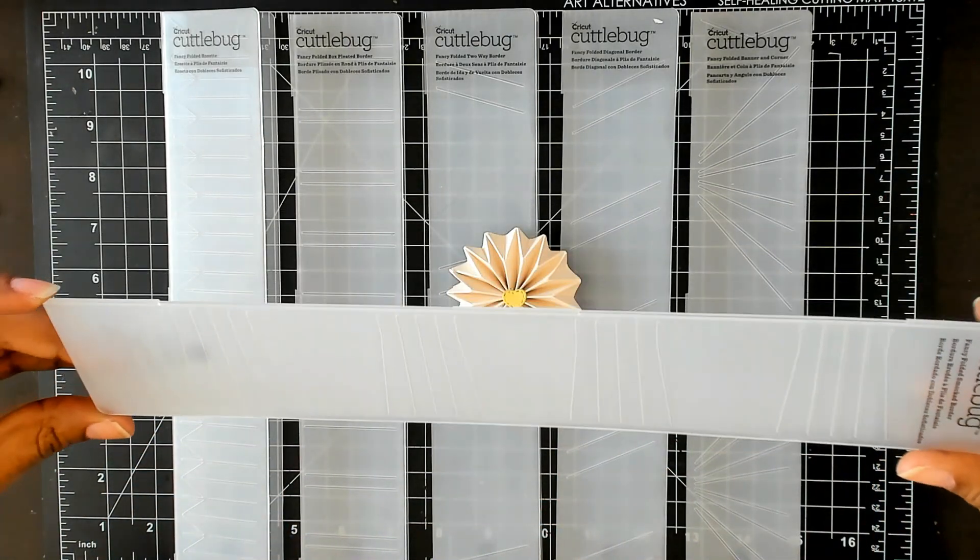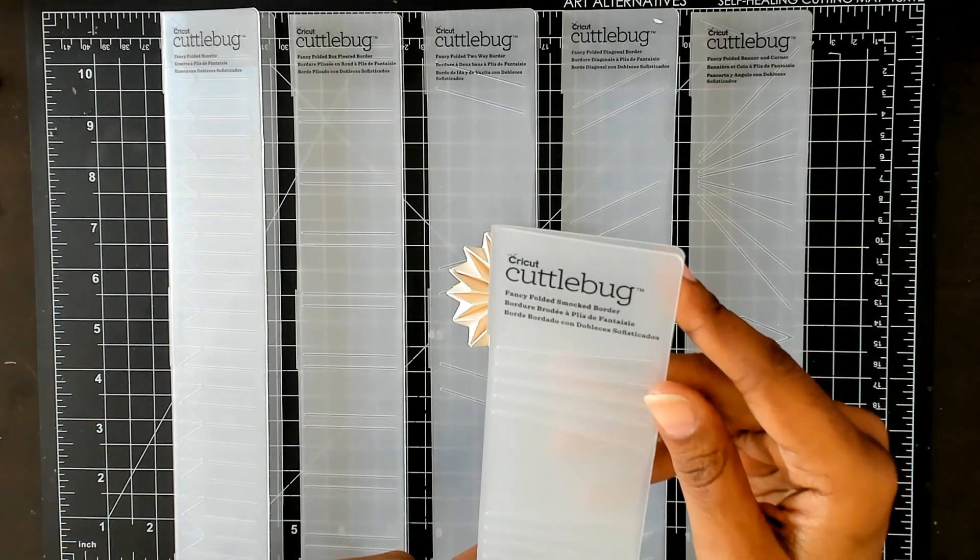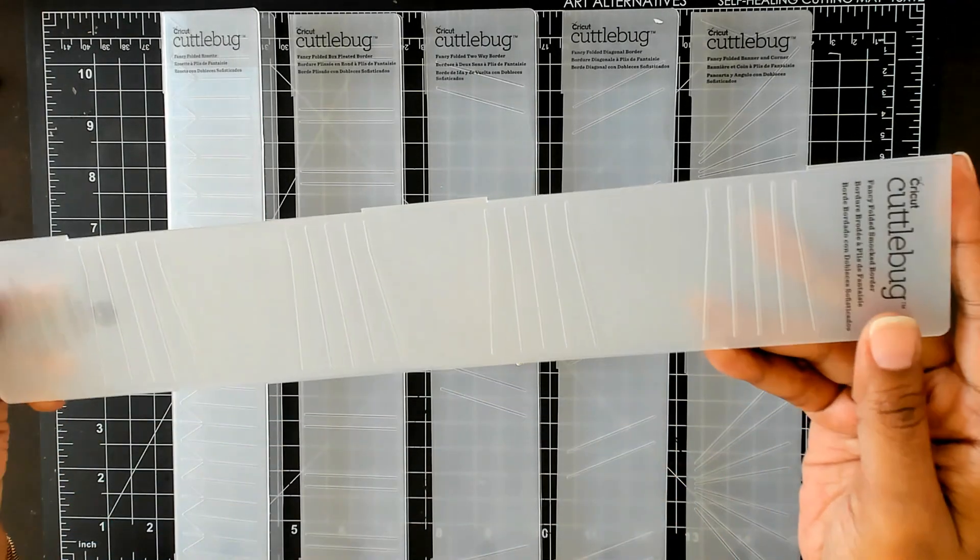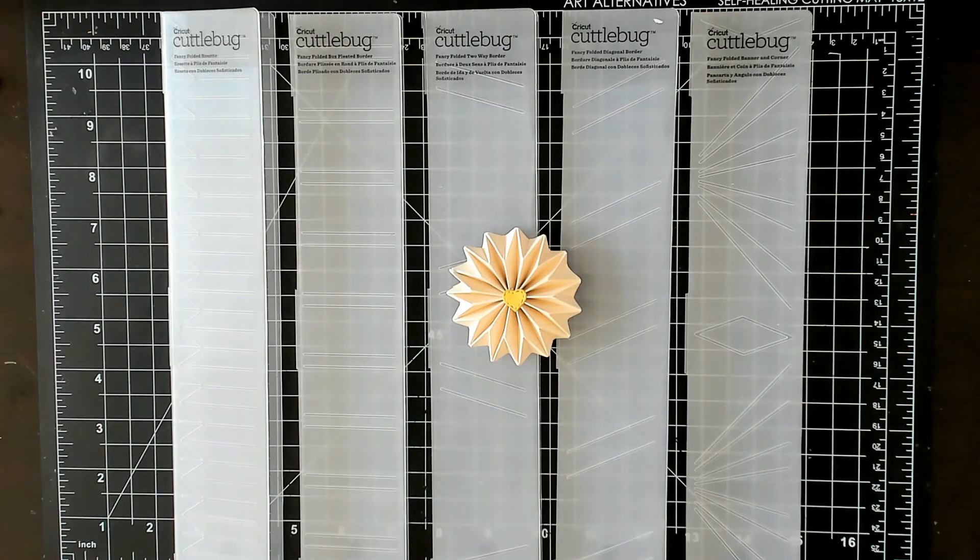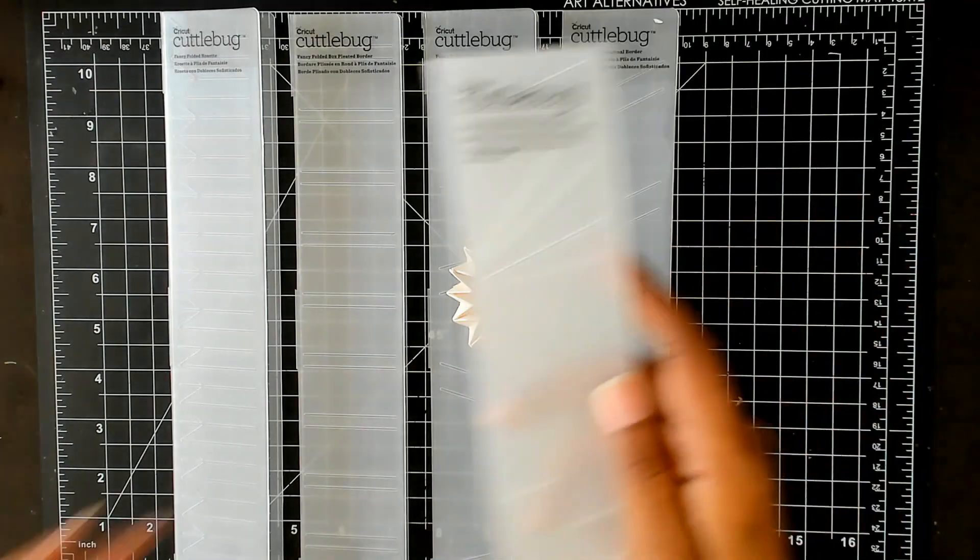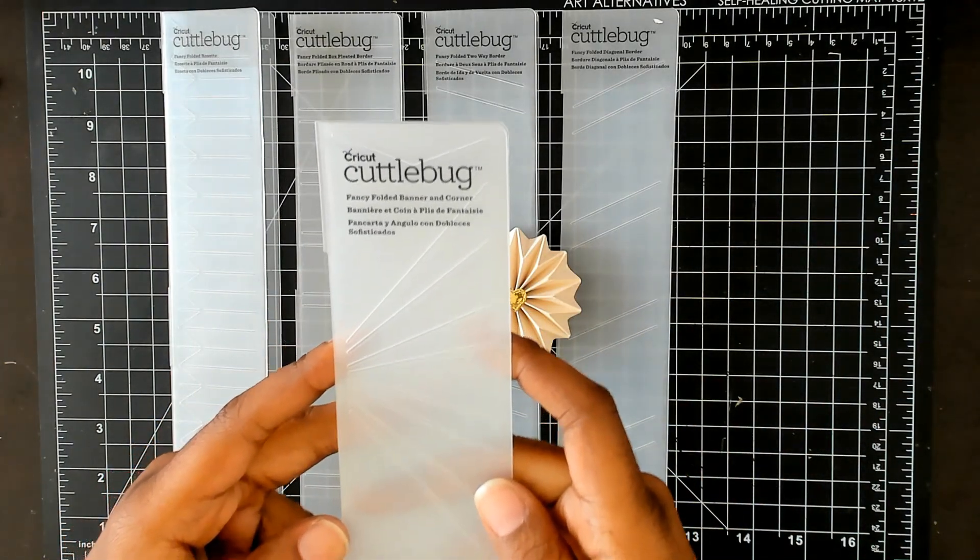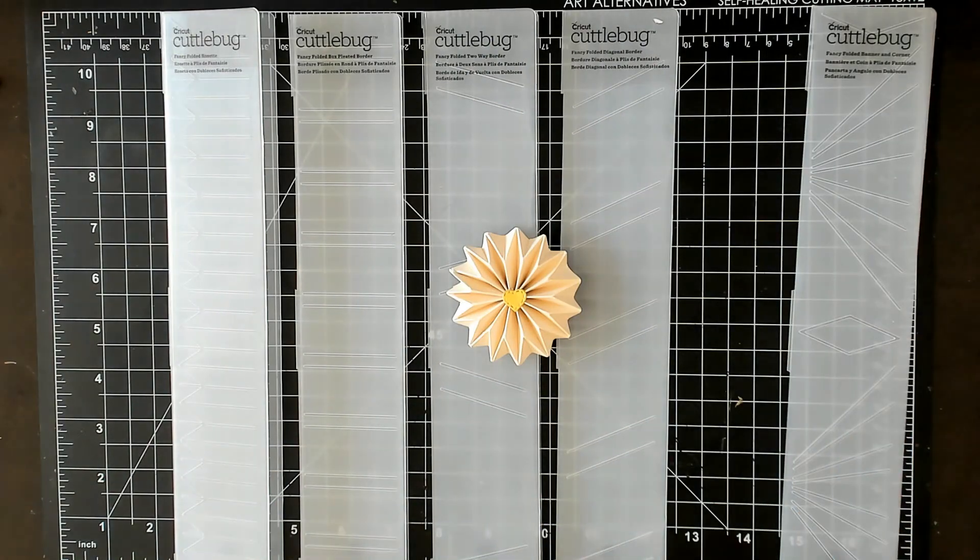And then this one here reminds me of drapery pleats. This one is called the Fancy Folded Smocked Border. I don't have a sample of that one. This one here is called Fancy Fold Banner and Corner and I do have a sample of that one.